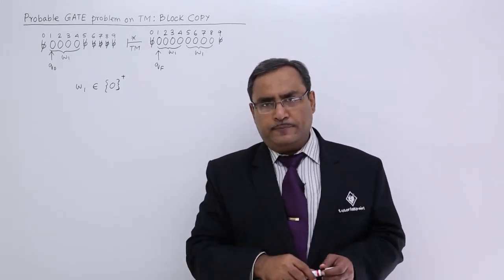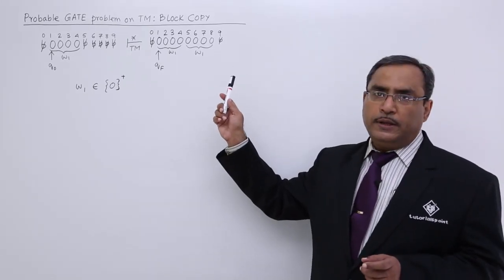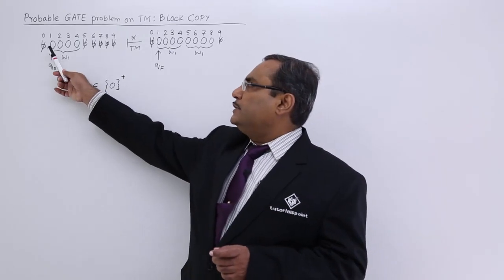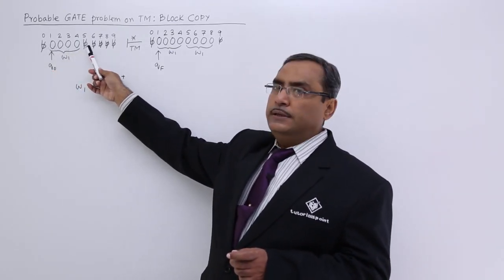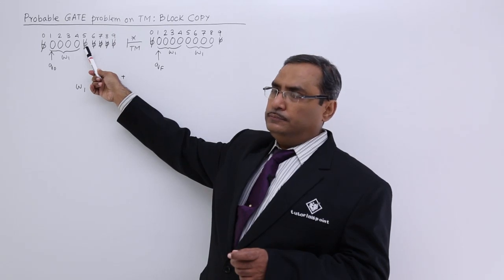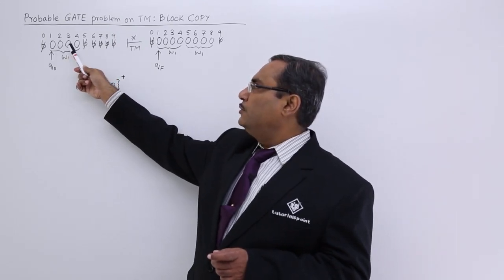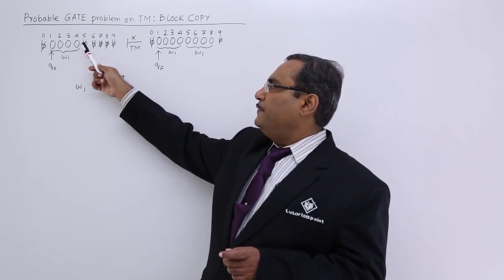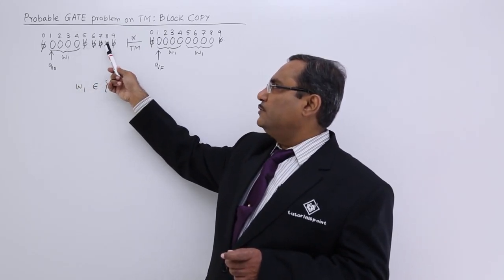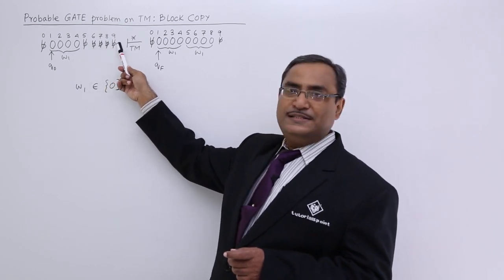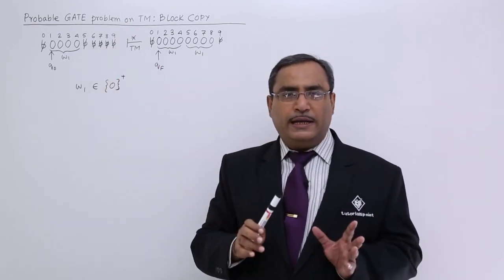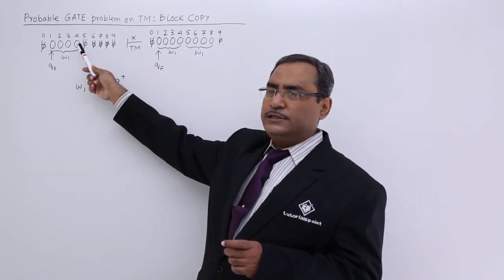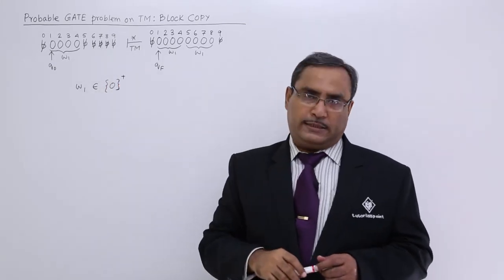Now how to do the planning? If we do the planning in this way that I shall read this 0 and then I shall come here, I shall make this one 0. Then I shall come here I shall make this one 0. If it is 0, I shall make this one 0. Then if it is 0 then you are going to make this one 0 again. Because you are not having any trace whether this 0 that you are reading here is from the source text or from the copied text.